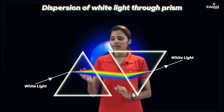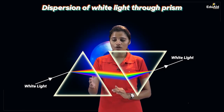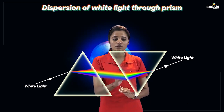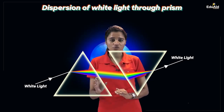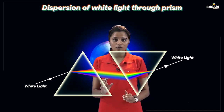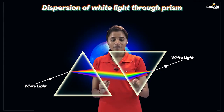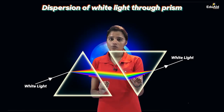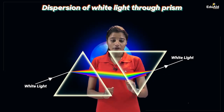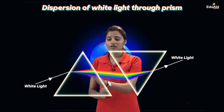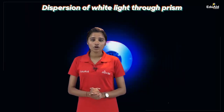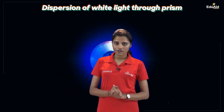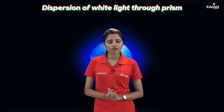We allowed white light to fall on the first prism, dispersion occurred, and we got the seven components. When these seven colours were allowed to fall on the second prism placed in an inverted position with respect to the first prism, white light emerged from the second prism. This is because the refraction produced by the inverted prism is equal and opposite to the refraction produced by the first prism. Now we can easily guess why we see the beautiful colours of a rainbow — it is because of dispersion.